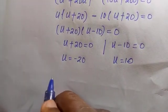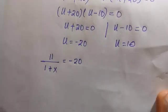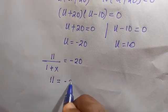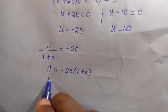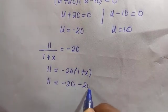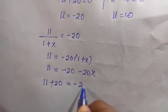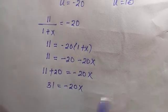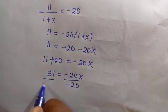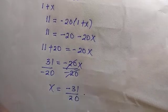Recalling that U equals 11 divided by 1 plus X, we substitute for the first case: 11 divided by 1 plus X equals minus 20. Cross-multiplying gives 11 equals minus 20 times bracket 1 plus X, which expands to 11 equals minus 20 minus 20X. Taking minus 20 to the left-hand side gives 11 plus 20 equals minus 20X, so 31 equals minus 20X. Dividing by minus 20 gives X equals minus 31 divided by 20 as the first solution.